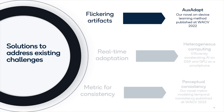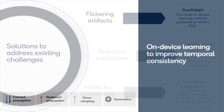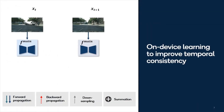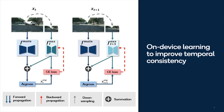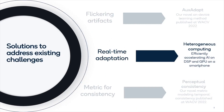The first one is AuxAdapt, our novel on-device learning method. AuxAdapt consists of two networks: first, a base network mainnet, which performs segmentation for the input video; and second, a tiny auxiliary network auxnet, which accomplishes efficient on-device learning. Both outputs are combined to generate the final prediction and to update auxnet, which in turn helps enhance the temporal consistency of the original output.